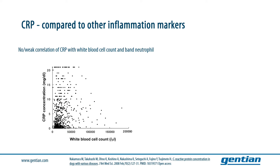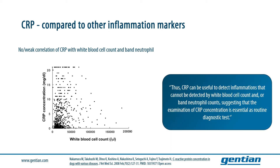One exemplary study compared CRP with white blood cell count and band neutrophil count, which are also commonly used to detect inflammation. This study included over 900 dogs with various conditions, and the authors found no or only weak correlation between CRP and white blood cell count and band neutrophil count. This means CRP was able to detect inflammations that were missed by the other two methods, and the authors conclude that including CRP is essential routine in diagnostic testing because it can reliably detect the presence of systemic inflammation.